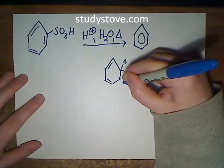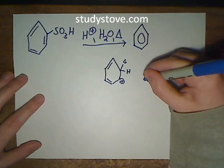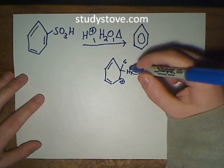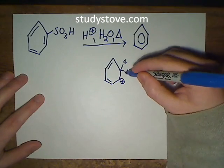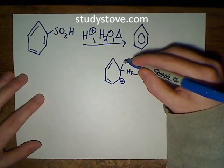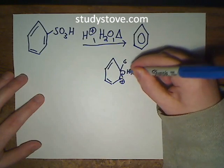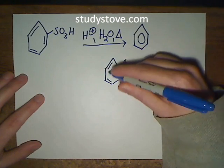In that last step, a base comes in and removes a proton that's bonded with the carbon that's attached to the group you just added. Then the electrons from that bond with the proton come down to reform aromaticity.